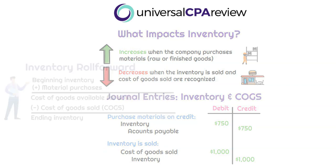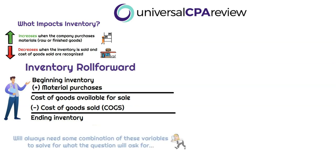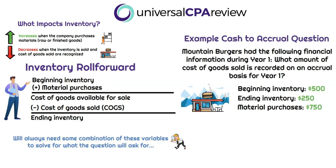Now we can introduce the inventory roll forward. We have beginning inventory, then what increases inventory — material purchases — giving us cost of goods available for sale. Then we subtract cost of goods sold for the period, which gives us ending inventory. The exam could give you any combination of these variables and ask you to solve for the missing one — such as how much inventory was purchased or what was cost of goods sold for the period.